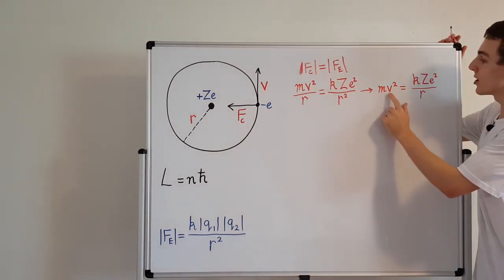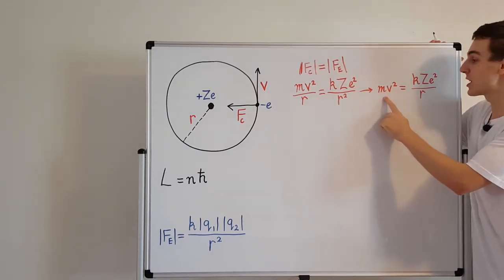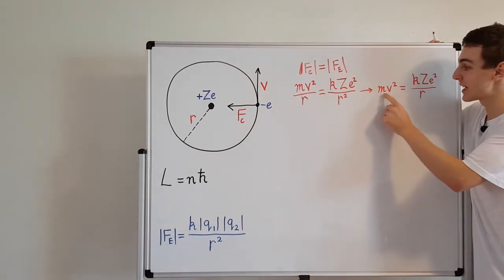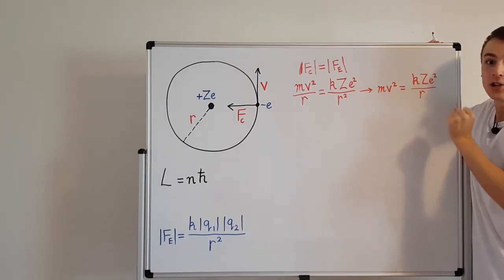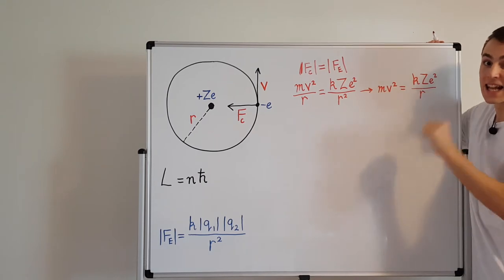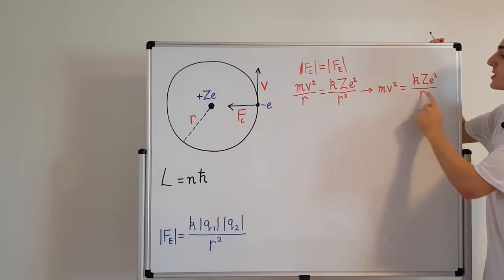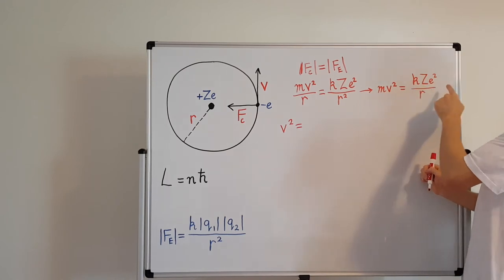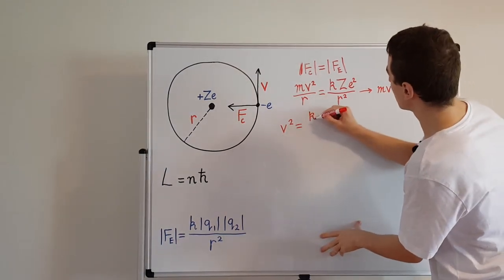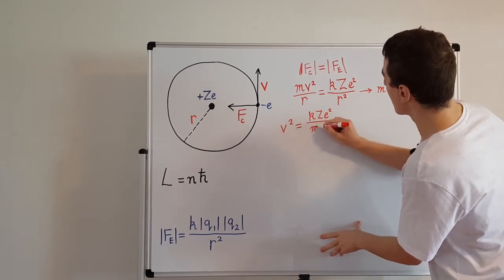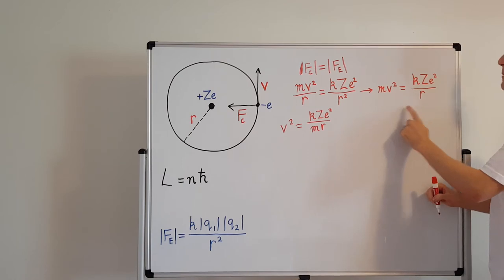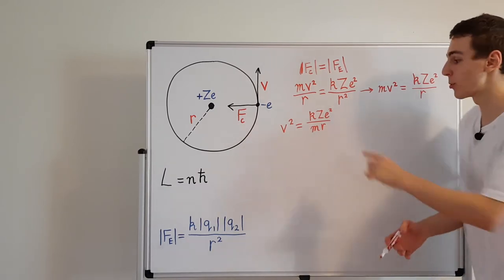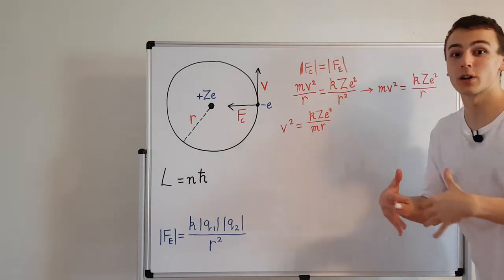The expression mv² is related to kinetic energy — divide by two and you get ½mv², the kinetic energy, which we'll use in the next video. For now, dividing both sides by m gives v² = kZe²/(mr). For hydrogen, Z equals 1, but I'm keeping Z in the expression so it works for other elements too. Now I need a second expression for v².